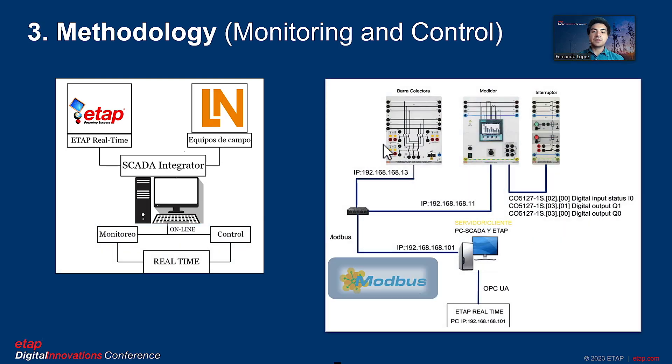Furthermore, the Modbus communication protocol is used for monitoring through the IP addresses of each of the Central Park 4200 meters. Finally, the OPC UA communication protocol is used for control through the digital inputs and outputs of the meters mentioned above.